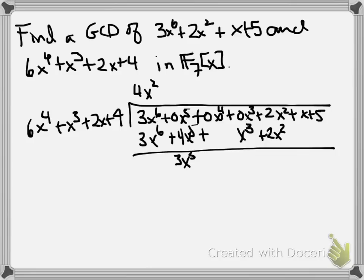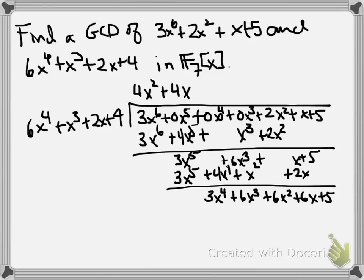Notice here that when I took 0x^5 minus 4x^5, I wrote down 3x^5 instead of minus 4x^5. That's because minus 4 and 3 are the same mod 7. Same thing, I could have had minus x^3, I wrote 6x^3. And so now we can still divide the 6x^4 in. Again, we need a 4 to get the 3 and an x. We do the same algebraic operations mod 7 and see that we're left with 3x^4 + 6x^3 + 6x^2 + 6x + 5.